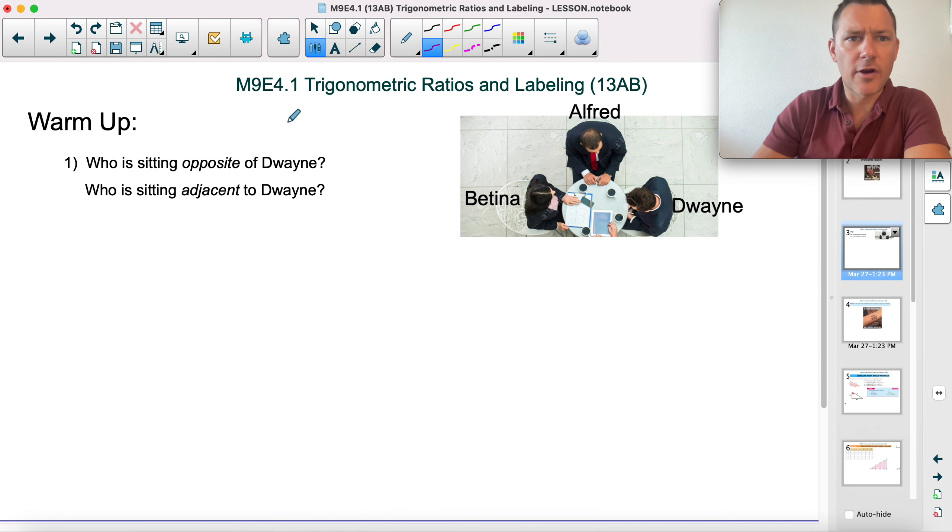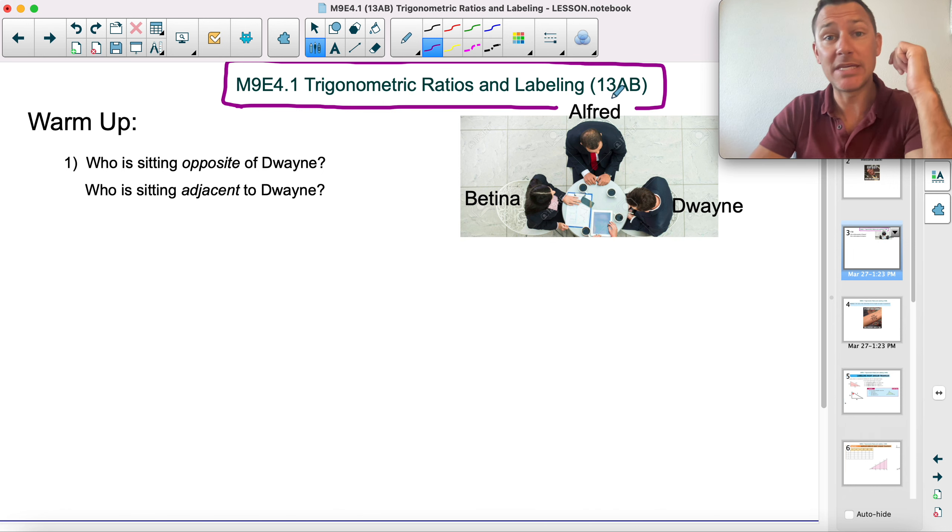Hey mathies, I'm sorry you're starting without me, but we're jumping into trigonometry. At the top of your notes, you can go Math 9 Extended 4.1 Trig Ratios and Labeling. It's out of 13AB in the text.